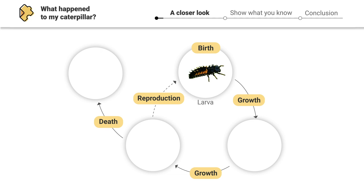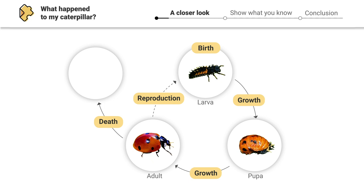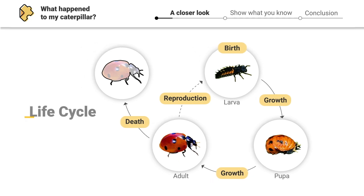Over time, the larva will grow, and as it grows, we call it a pupa. The insect continues growing until it becomes an adult. At this point, it can reproduce by laying more eggs, which then restarts the cycle. Over time, the adult insects will grow older and eventually die. These four stages of birth, growth, reproduction, and death make up what's called the life cycle.